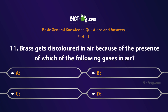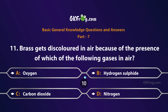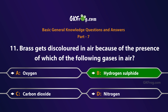Brass gets discolored in air because of the presence of which of the following gases in air? A. Oxygen, B. Hydrogen sulfide, C. Carbon dioxide, D. Nitrogen. Correct answer is B. Hydrogen sulfide.